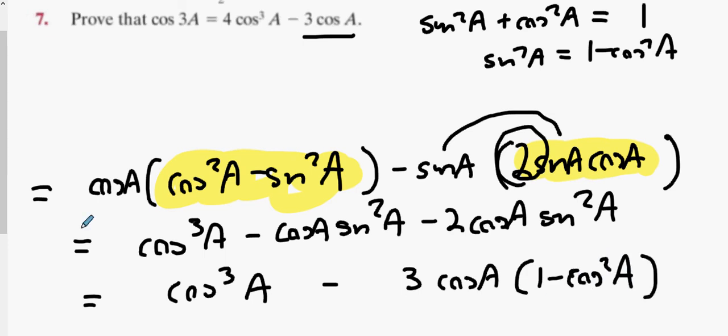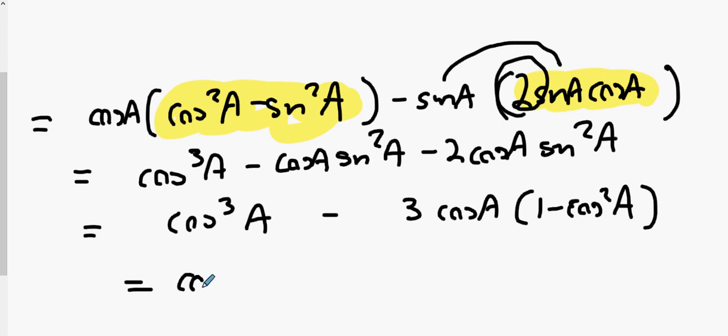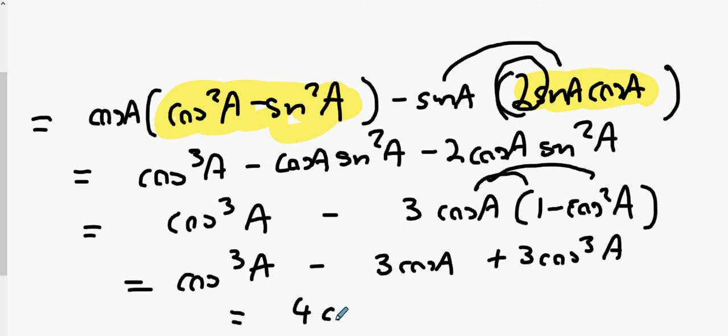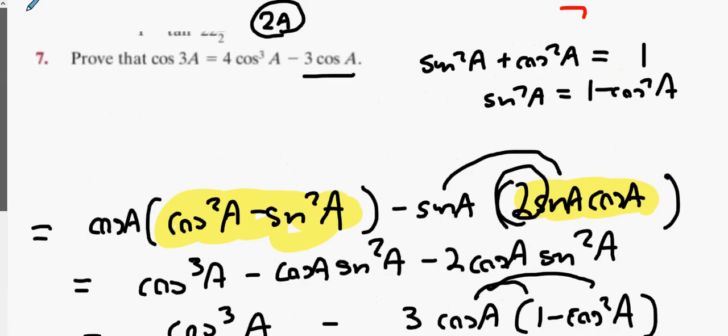So what happens when I multiply it out? 3 cos A times cos²A? 3 cos³A. And what's 3 cos³A plus cos³A? 4 cos³A minus 3 cos A. Yeah it's pretty hard, yeah it's pretty difficult, let's not gonna lie. So that was 7, wasn't it?